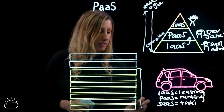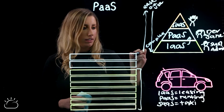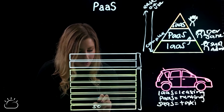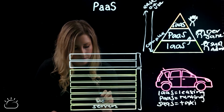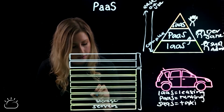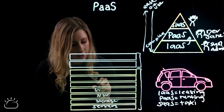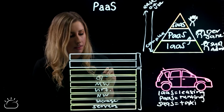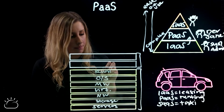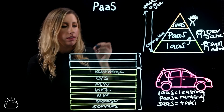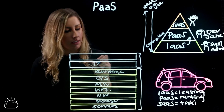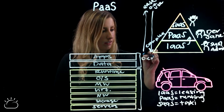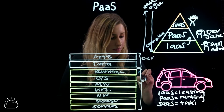So let's think about what that means in terms of cloud computing — what the vendor provides and what the developer, or Jane, provides. The vendor provides servers, storage, networking, virtualization, middleware, the operating system, and the runtime. And all that leaves for the developer to provide is their data and applications. That's the cloud vendor's responsibility.